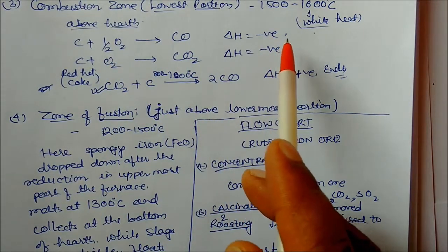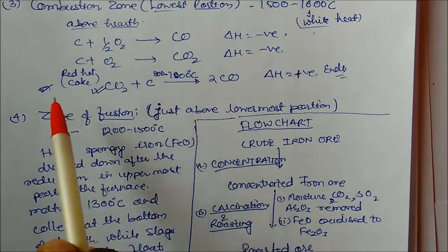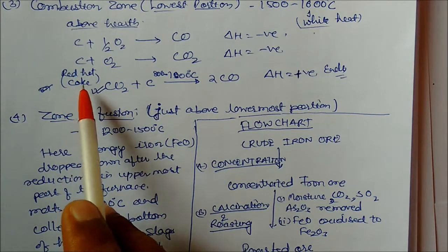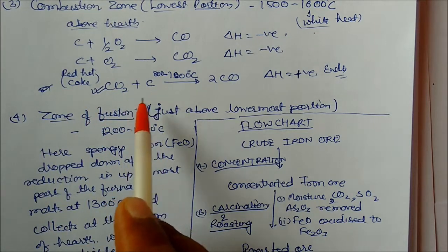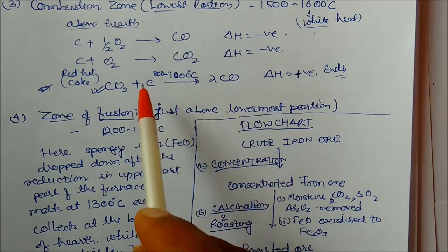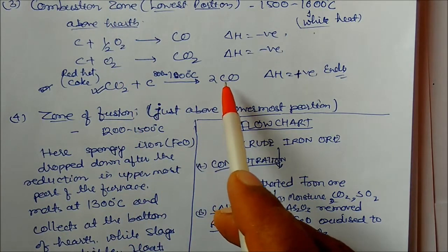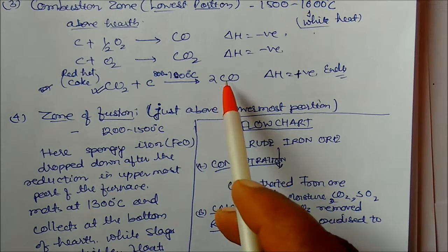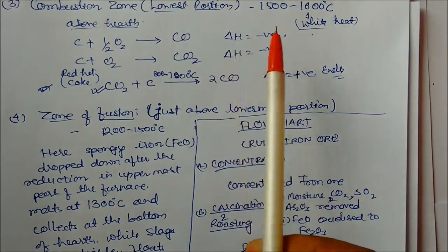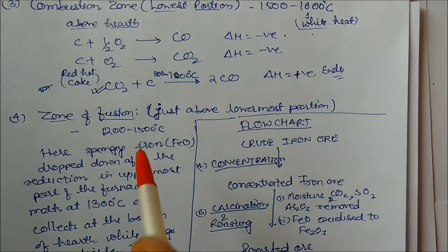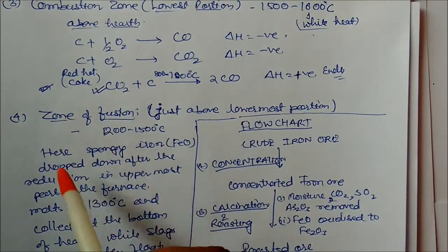CO2 reacts with the very hot coke at 800 to 1000 degrees centigrade, just above the combustion zone, to form carbon monoxide. This CO is lighter and moves upward to the top portion of the blast furnace, where it combines with Fe2O3 and Fe3O4 seen in the reduction zone.